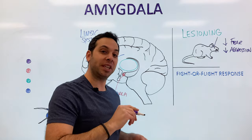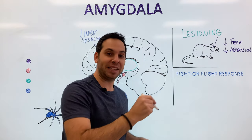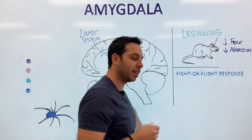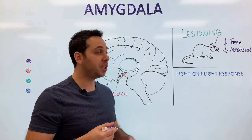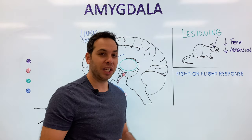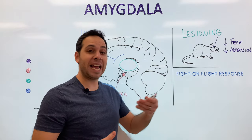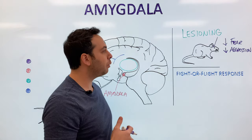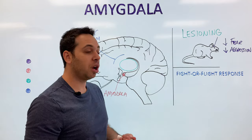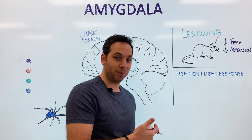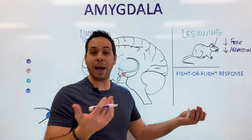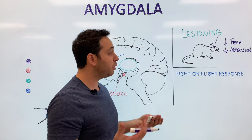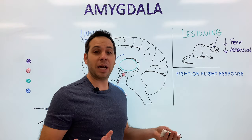You would also do the opposite — what if you stimulate that part of the brain? If you take an electrode and stimulate the amygdala, you'll see the opposite. You'll see the rats becoming aggressive, attacking another rat, or they might become more fearful. That's kind of how we know what the amygdala does — you either remove or destroy that part of the brain and see what happens, or you stimulate it.